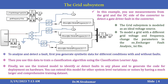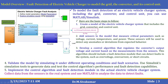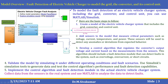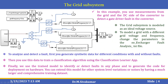This grid subsystem is modeled as an ideal voltage source. To model a grid with different grid voltage and frequency, change the parameters in the available files. To analyze and test a fault, first generate synthetic data for different conditions with and without faults. You can click on the model parameters to see the synthetic data. Then use this data to train a classification algorithm using the Classification Learner app available in MATLAB Simulink. Finally, use the trained model to identify or detect faults in any phase and generate code for deployment on particular hardware.